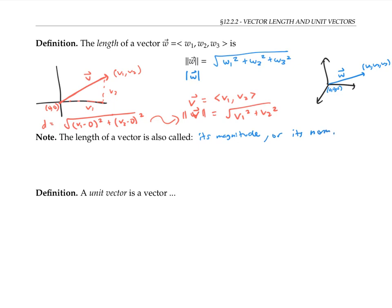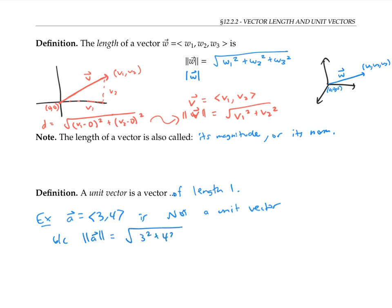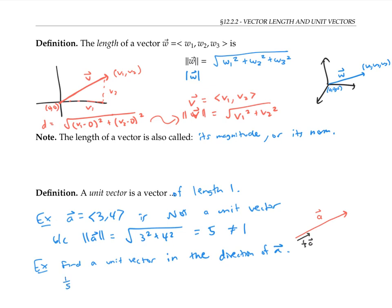A unit vector is a vector of length one. So for example, the vector a with components three, four is not a unit vector, because the length of a — which is the square root of three squared plus four squared — is five, which is not one. But if we wanted to find a unit vector in the same direction as a, since a is five times too long, the simple thing to do is multiply a by one fifth. So one fifth times a is one fifth times the components three and four, giving three fifths, four fifths.